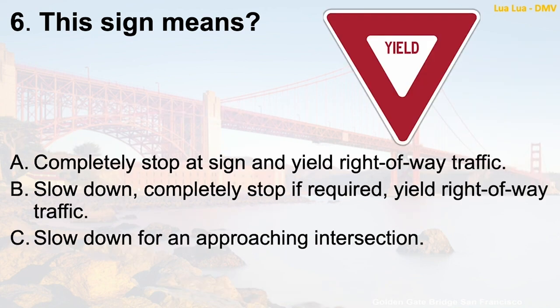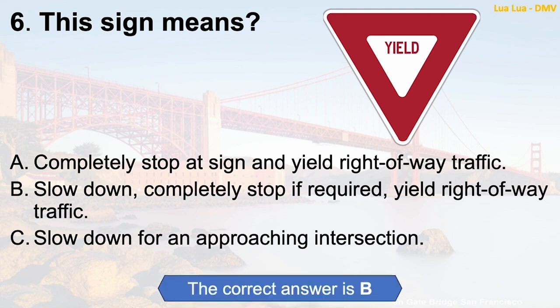Question 6: This sign means — A. Completely stop at sign and yield right-of-way traffic. B. Slow down, completely stop if required, yield right-of-way traffic. C. Slow down for an approaching intersection. The correct answer is B: Slow down, completely stop if required, yield right-of-way traffic.